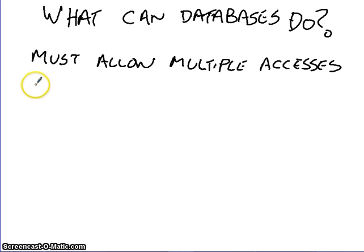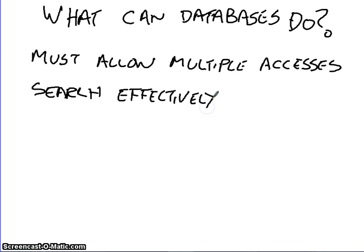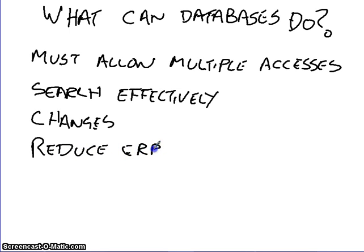The other thing it must be able to do is, we must be able to search effectively. Again, it is no point in having a database with 800 million people in it, like Facebook, if we can't find it. We have to be able to make changes. And we have to be able to make sure that we reduce errors. Now this is where we're coming from today. Because to reduce errors, we have to use a key term. Now the key term here is validation. This is the one that we really want you to take away from this lesson today.